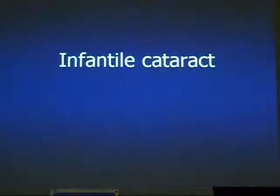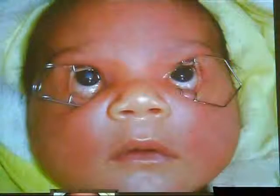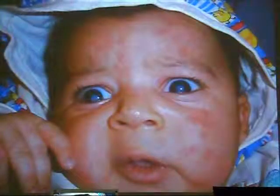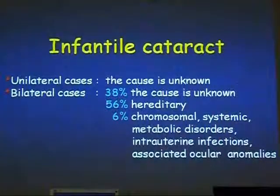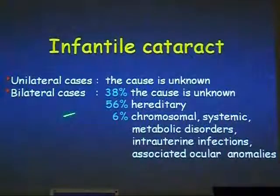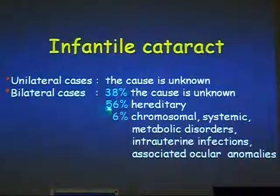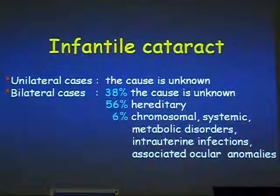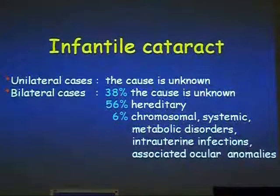Now some details about infantile cataract. It may be unilateral or bilateral. For unilateral cases, the etiology is most probably unknown. In bilateral cases, 38% the etiology is unknown and 56% is hereditary. Only 6% collectively include chromosomal anomalies, systemic metabolic disorders, intrauterine infections, or association with other congenital ocular abnormalities.